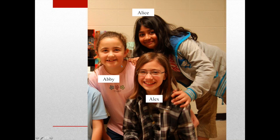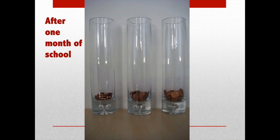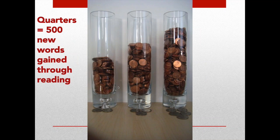If we give students a penny for every 500 words they read, this is what it looks like after the first day of school — it doesn't look that much different. Abby's got two more pennies than the rest of them. But as you see after one week, the pennies are beginning to add up. After a year we can really see some differences. But where the differences are really critical are in the quarters — each of those quarters represents rare words that students have encountered. The student on the right-hand side actually has a substantial number: 2,500 rare words versus 1,000.